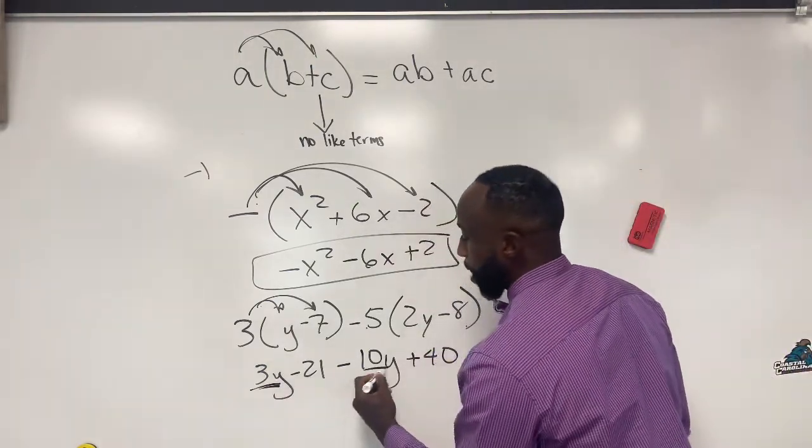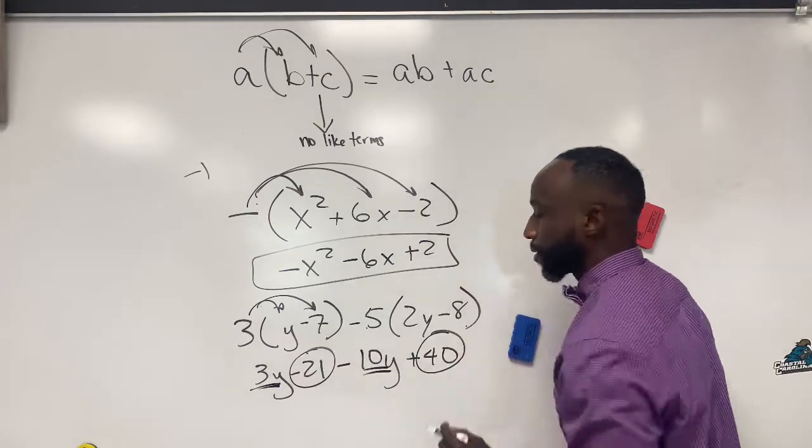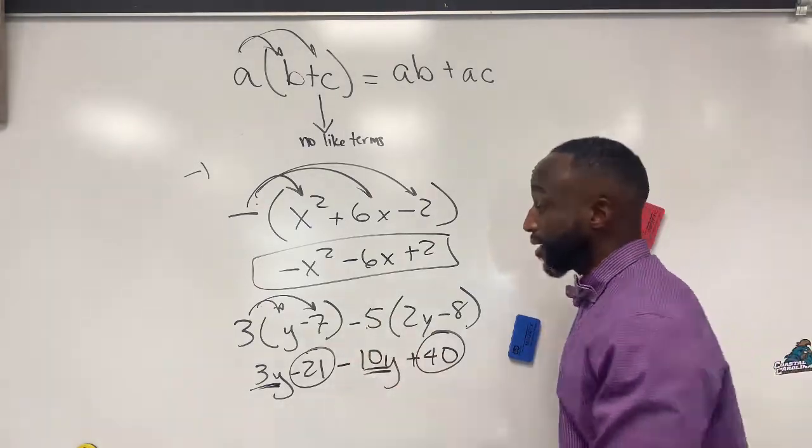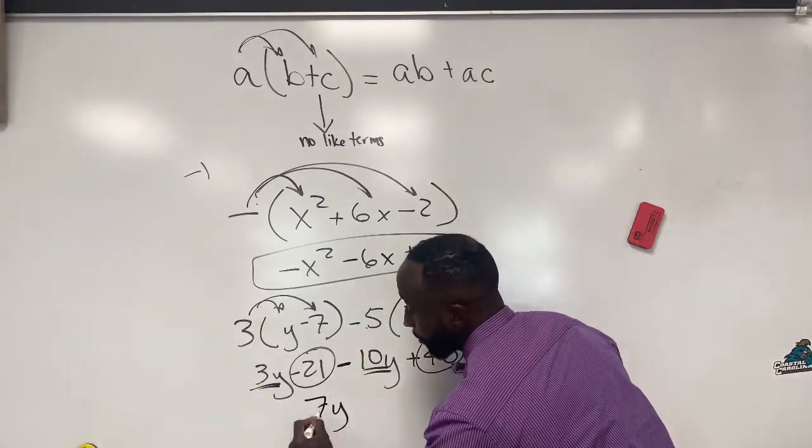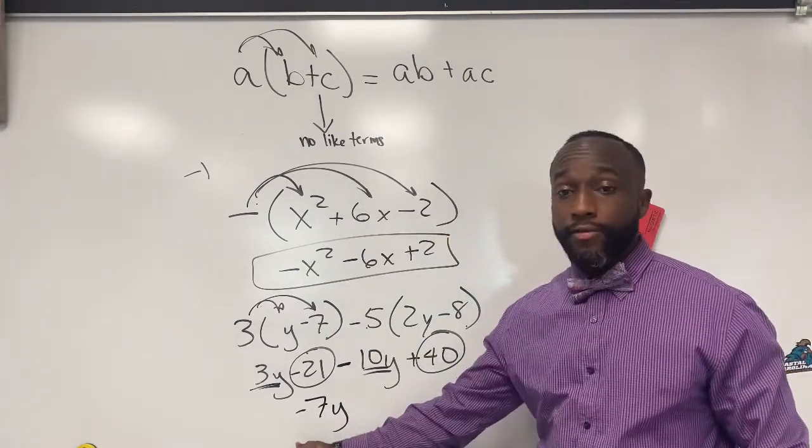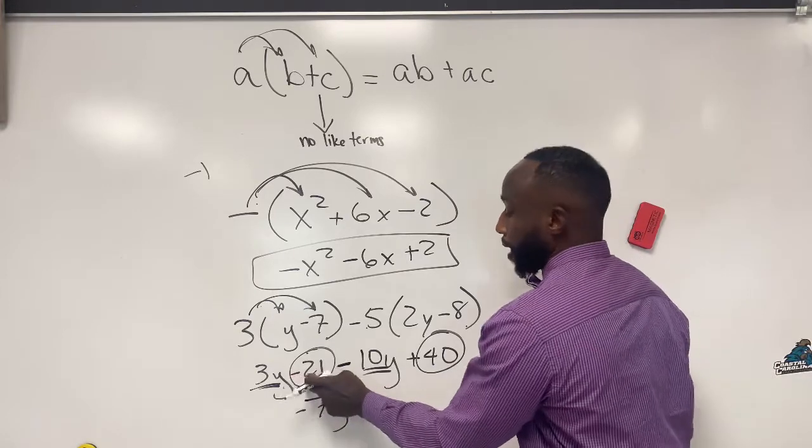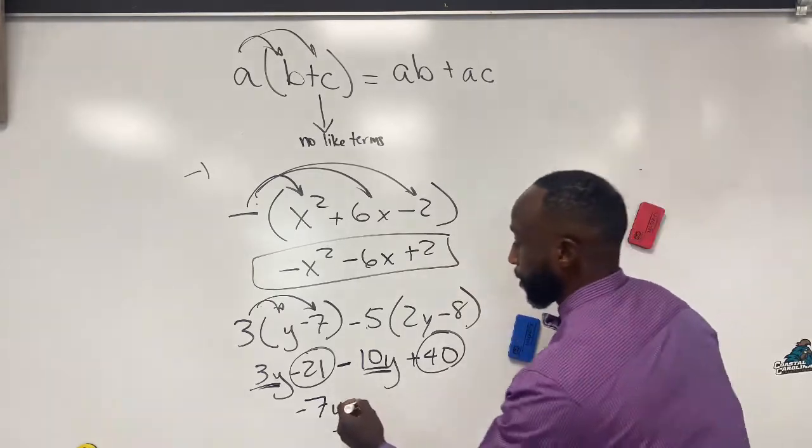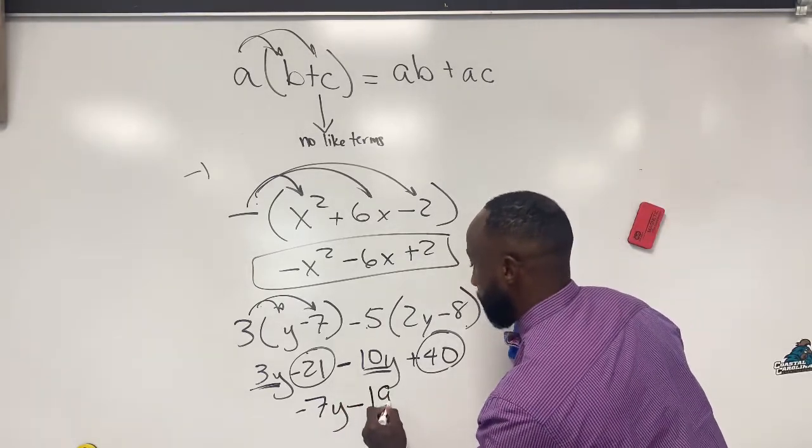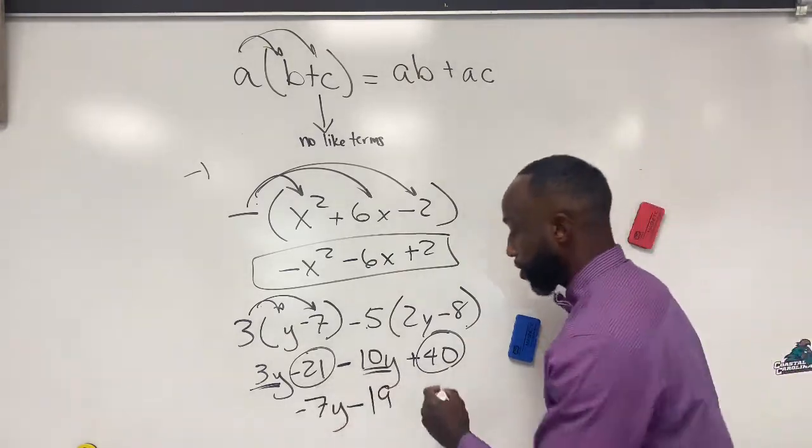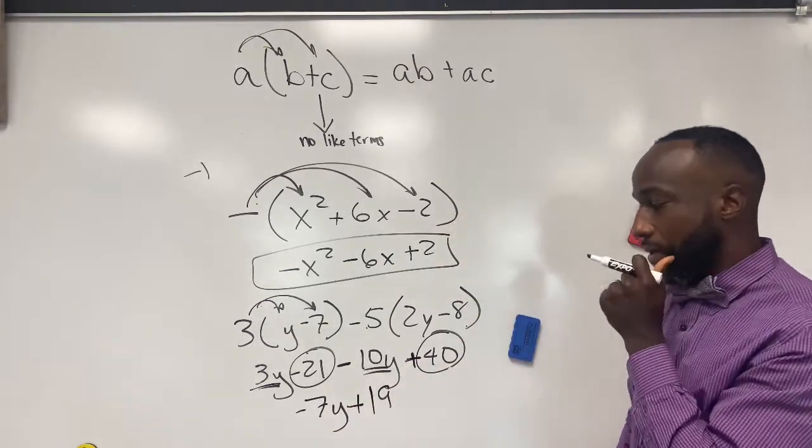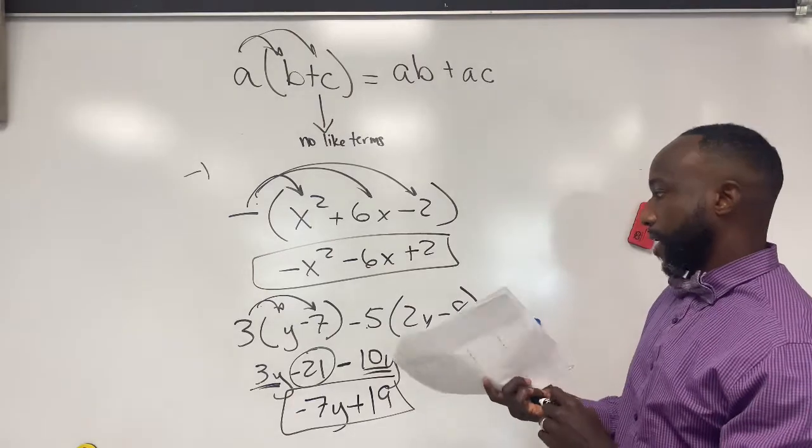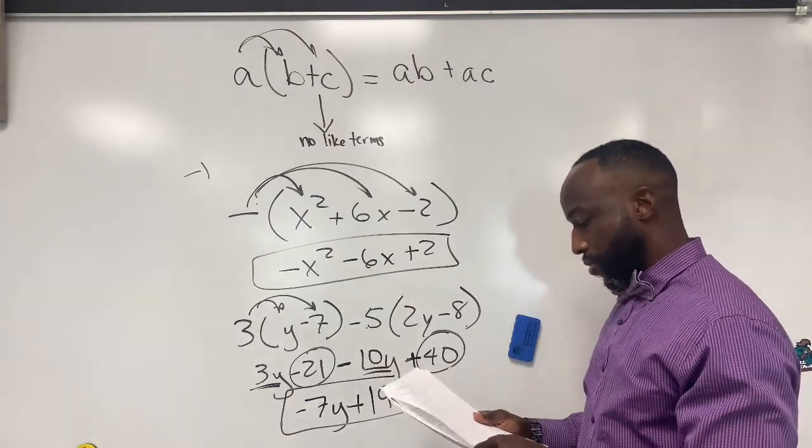One set of like terms are your y's, another set are your whole numbers. So let's do this. Three minus ten, different sign, subtract, keep the sign of the bigger number, then you'll be exact. So you got negative seven y, and then you have negative twenty-one plus forty. That's going to give you nineteen. Positive nineteen. Different sign, subtract, the bigger number is positive here. So we're going to have negative seven y plus nineteen.